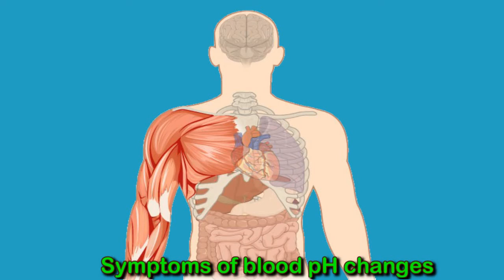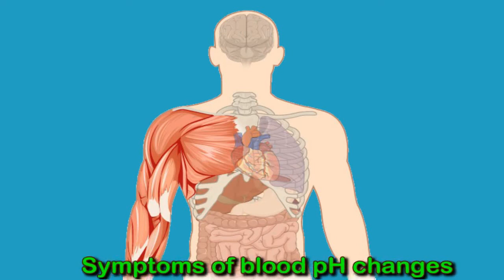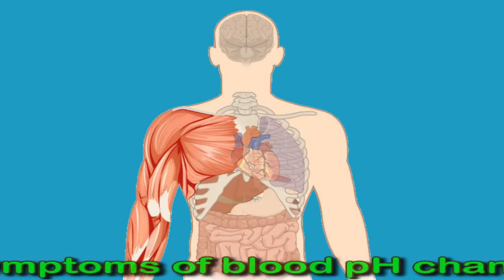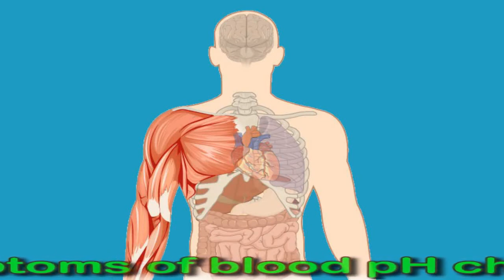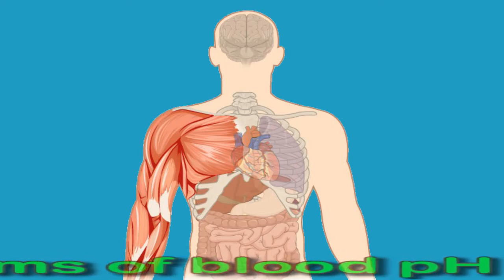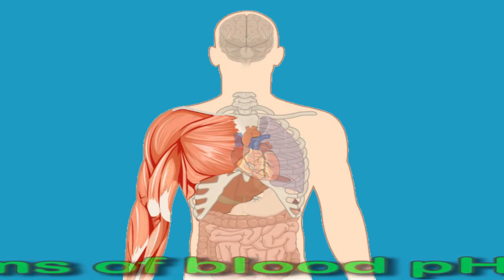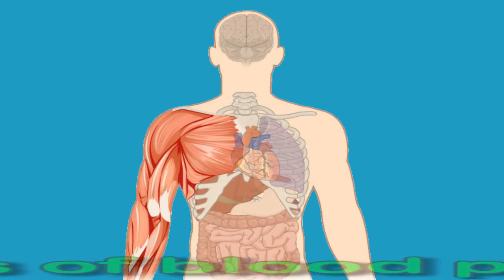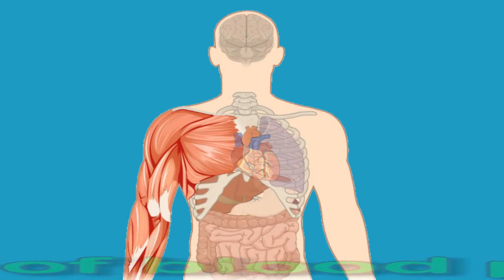Additional symptoms of acidosis include unconsciousness and coma. Symptoms of alkalosis include confusion and lightheadedness, shaky hands, numbness or tingling in the feet, hands, or face, muscle twitches or spasms, vomiting or nausea, and coma.